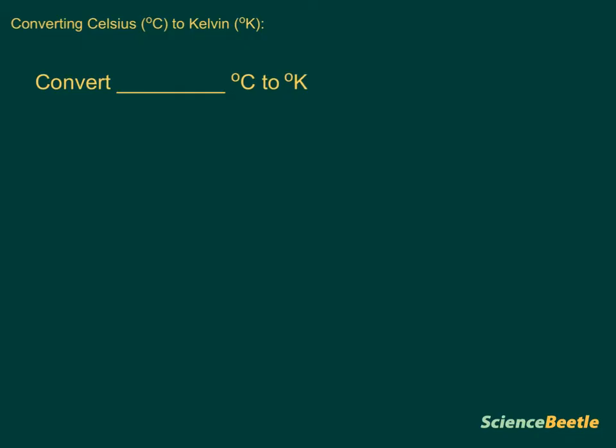Let's say we want to convert 20 degrees Celsius to Kelvin. The thing we need to do is remember that in order to find Kelvin, we have to use one general equation: Kelvin equals degrees Celsius plus 273.